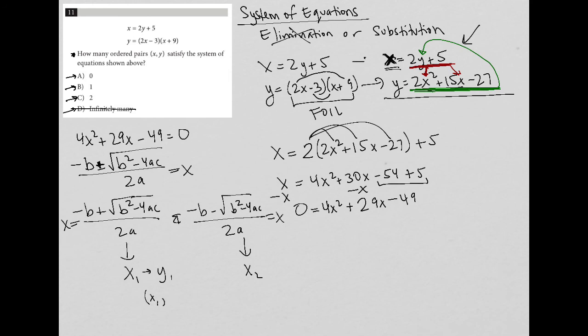Now, whatever value I get for x₁, I can plug in, and I'm going to get a y₁. So that would be my first ordered pair solution. And whatever I get for x₂, I'm going to plug it in to one of the equations, and I'll get a y₂, or a second y value, a y value that matches with that second x value. So that would be like an (x₂, y₂). So that means I'm going to have two solutions, which means my answer is choice C.